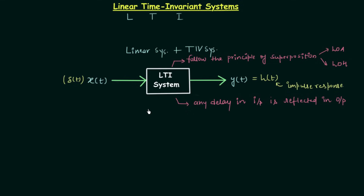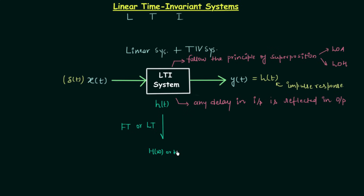By using the Laplace transform, we go to the frequency domain. You will have the system relationship in the frequency domain, and using that relationship you can calculate the transfer function. Our LTI system is defined using the impulse response h(t), but when the impulse response is not given and the relationship between y(t) and x(t) is given, we use the Laplace transform to get H(s), or the Fourier transform to get H(omega).